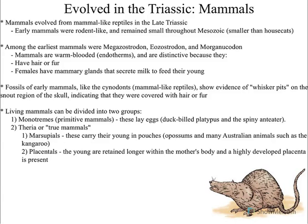Let's take a look at another group that evolved during the Mesozoic, definitely in the Triassic — and it's going to be mammals. As we saw in the Paleozoic, we have our mammal-like reptiles that evolved. But by the time we get to the Triassic, we definitely have some real true mammals. And they're definitely very small, kind of mouse-sized, even looking kind of like a mouse there.